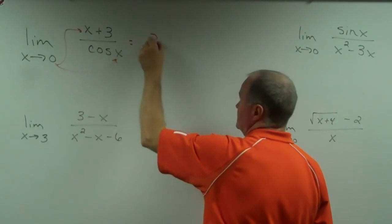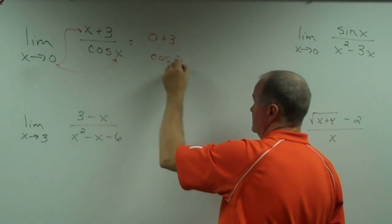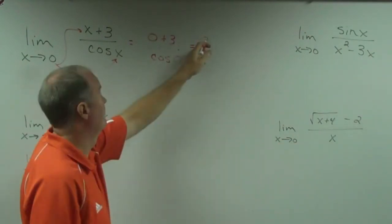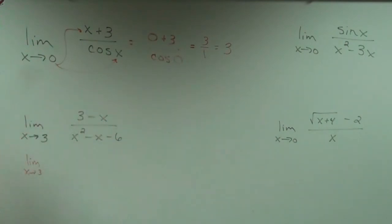Plug it in. 0 plus 3 over the cosine of 0, which equals... I'm like, because then isn't it 3 over 0, so... My fault. I wasn't really paying attention to myself.